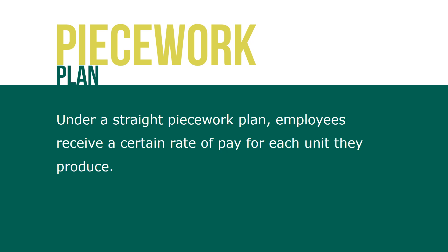Merit pay increases and lump sum bonuses reward employees based on past performance levels. In contrast, piecework incentive plans are more forward-looking because they reward employees for future performance. Under a straight piecework plan, employees receive a certain rate of pay for each unit they produce — for example, a salesperson might be compensated $1 for every call made to a potential customer. Under a differential piecework plan, the pay per unit changes at certain output levels — for instance, employees making more than 10 calls in one hour might receive $1.10 per call compared to $1 for those not meeting that threshold.